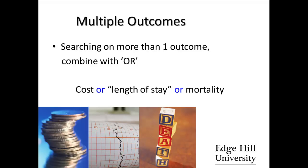Just a word of caution: when searching on multiple outcomes you would combine them with OR, since although they are not synonyms of each other, they are related in the sense that you want to retrieve papers that look at either of them. For example, you may be interested in outcomes that look at cost, or length of stay, or mortality.